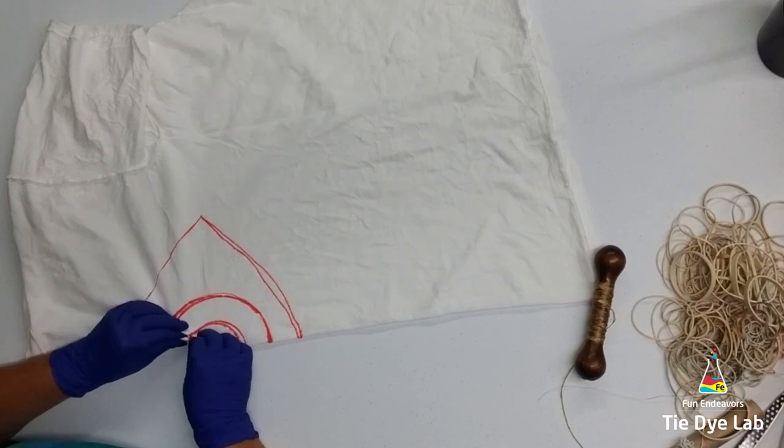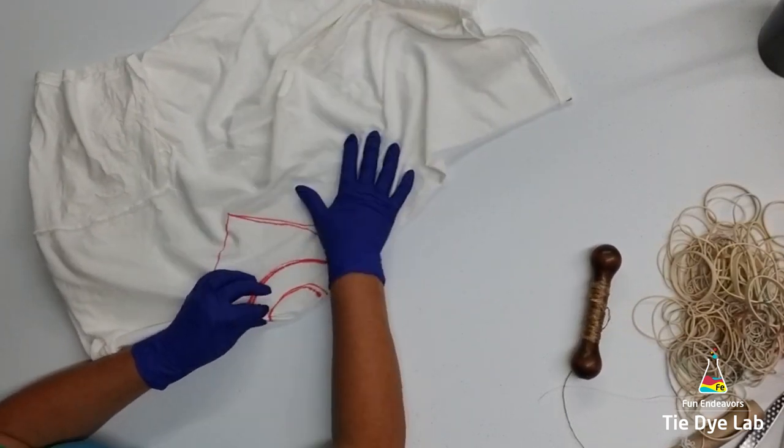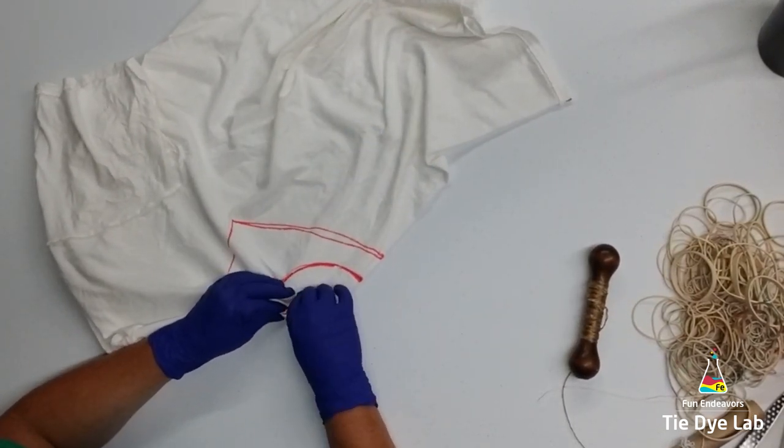I'm going to start with the center circle or the pupil and I'm going to go ahead and fan fold that and tie it with some sinew.